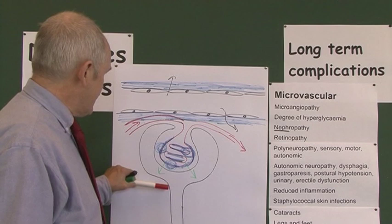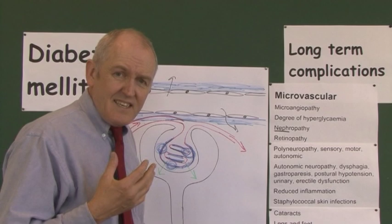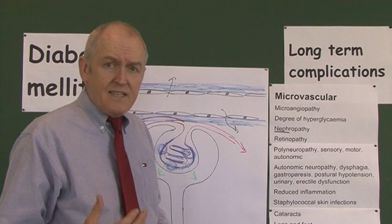Now, the next one we want to look at is the basement membrane thickening and the damage to the capillaries affecting the eyes. That's diabetic retinopathy.